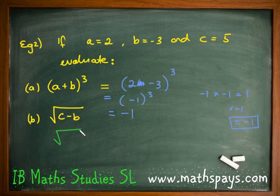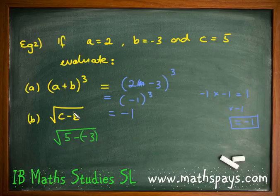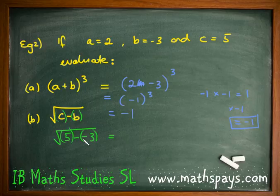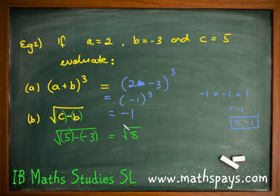The last one here is the square root of C minus B. C is 5 and B is negative 3 — make sure we put that in. If you're not sure, put your brackets in where the B is, and even where the C is, to ensure you have the two negatives. Two negatives make a positive, and we get the square root of 8. We can alternatively express that as a decimal — to one decimal place we get 2.8.